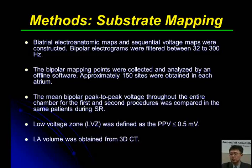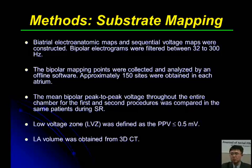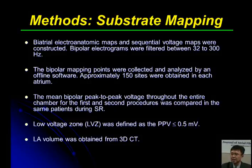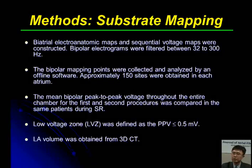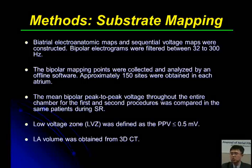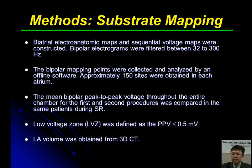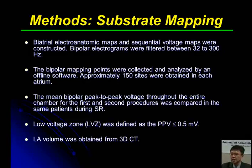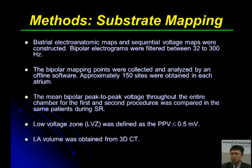Regarding substrate mapping strategies, biatrial electroanatomical maps and sequential voltage maps were constructed. Bipolar electrograms were filtered between 32 to 300 Hz, and bipolar mapping points were collected and analyzed by online software. Approximately 150 sites were obtained in each chamber. Mean bipolar peak-to-peak voltage throughout the entire chamber was compared between first and second procedures for the same patients during sinus rhythm. Low-voltage zones were defined as bipolar peak-to-peak voltage less than 0.5 millivolts.